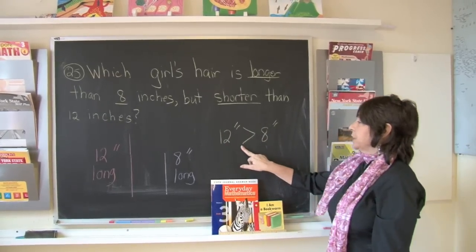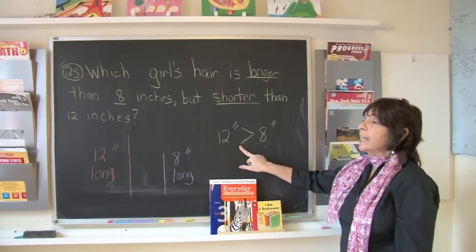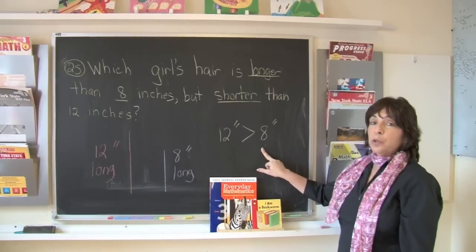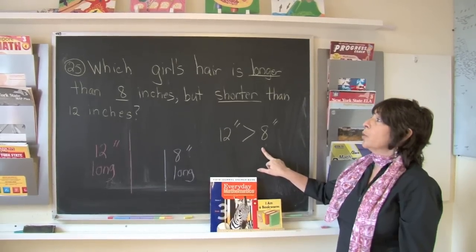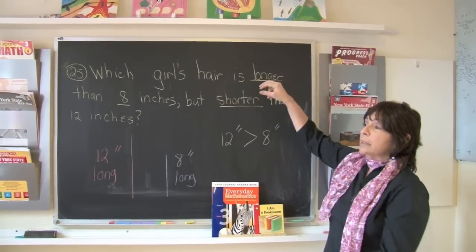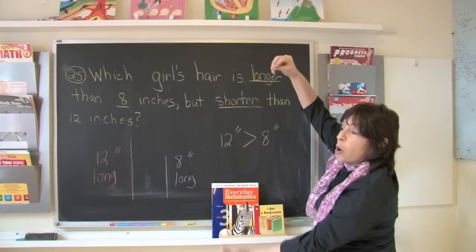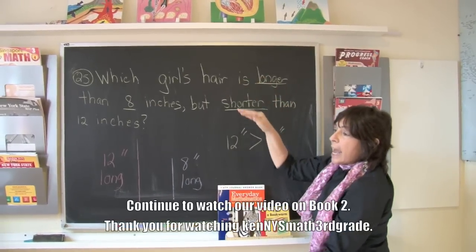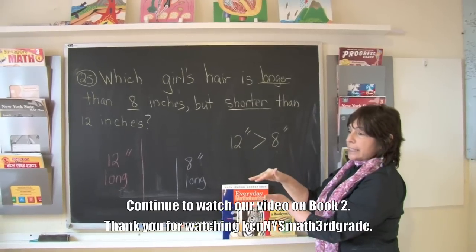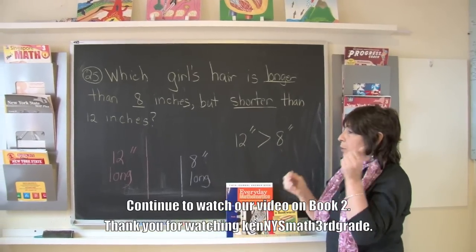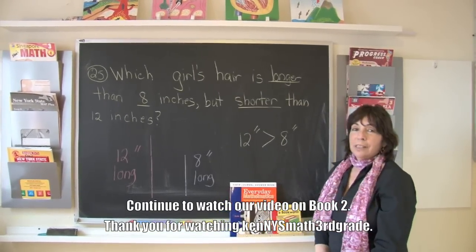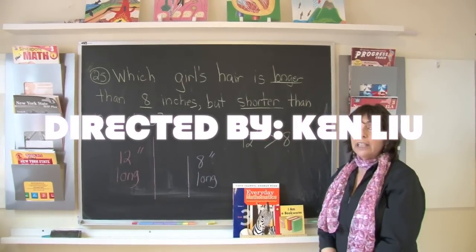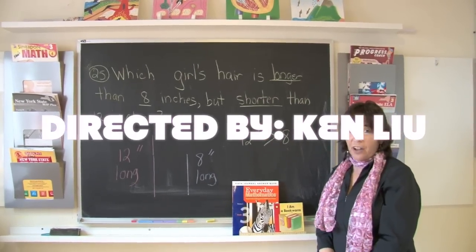So twelve inches is greater than eight inches. What you need to know is that 'longer' means more than, and 'shorter' means less than. Boys and girls, just read carefully and you will do fine.